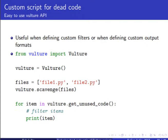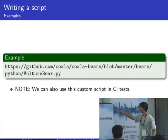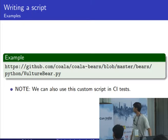For a custom script for dead code using the API: you call get_unused_code. Each item in Vulture is an abstract class giving you information about each piece of dead code — the confidence, the line number, the column number, the name and everything. You can define your filters — for example, if item.confidence is greater than or equal to 75, or any filter condition you want. An example is in the Vulture bear of coala.